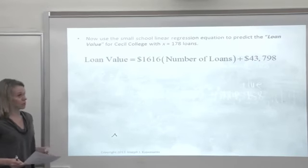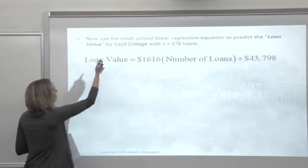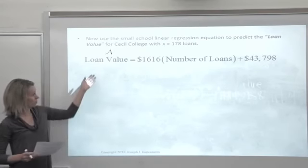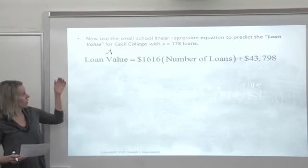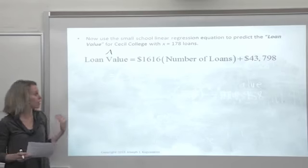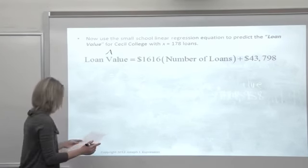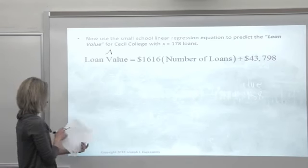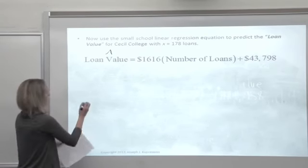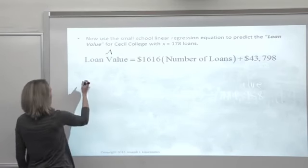Cecil College was a small school. When we had the model where all the schools were lumped together, we weren't real thrilled with the predicted value we got for loan value. So let's look at our new regression equation for just the small schools. And what if we put Cecil College in here, who issued 178 loans. Let's see what this new regression equation would predict. You're going to have to fill this in in your notes. We're going to plug in 178 loans for Cecil.